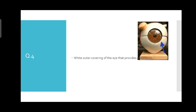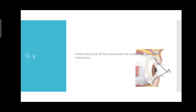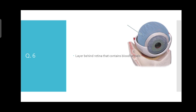Question number five: the outermost layer of the sclera and inner eyelid that provides lubrication. The answer is the conjunctiva, because it covers the eye and is responsible for lubrication. Question number six: the layer behind the retina that contains blood vessels. The answer is the choroid.